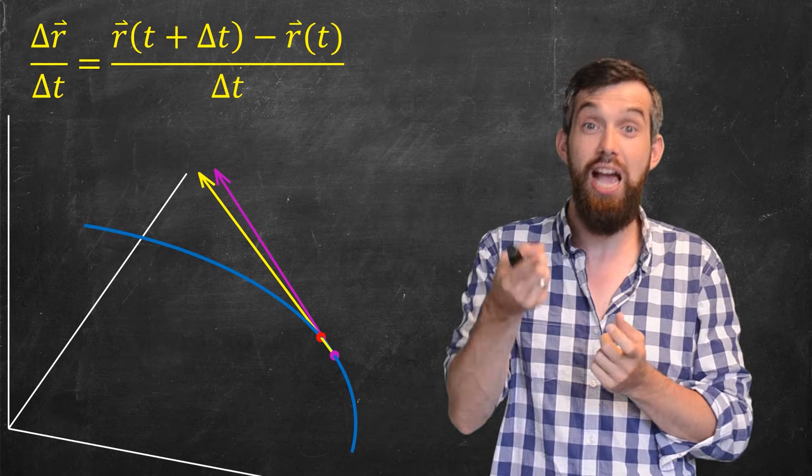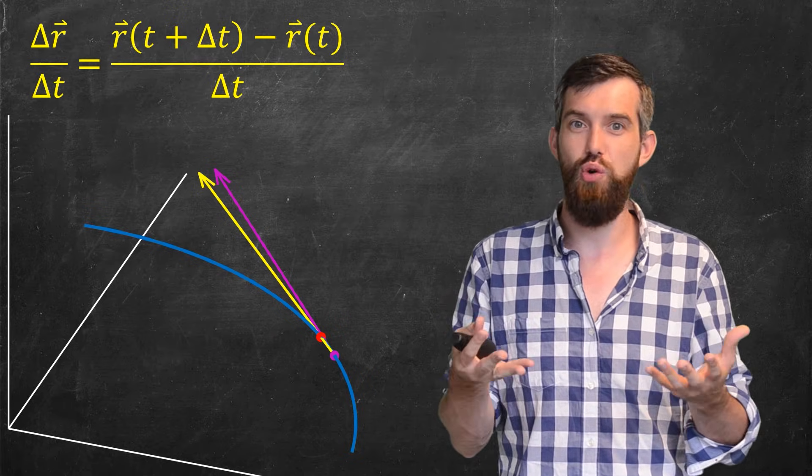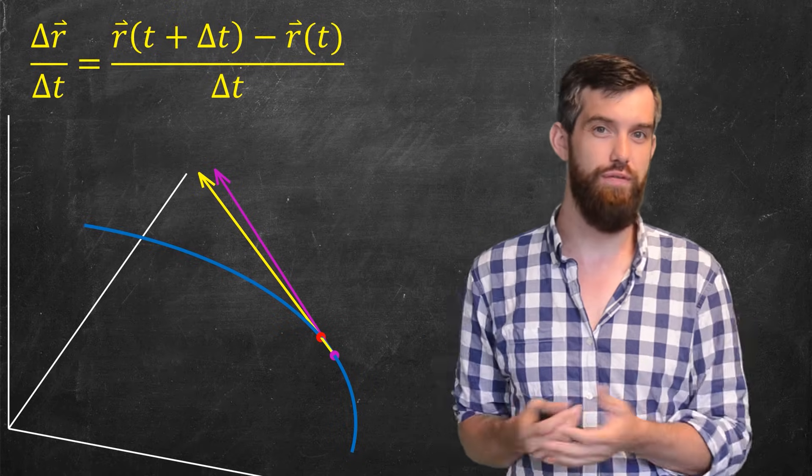And now what you'll see is that that yellow vector, the difference quotient, is getting closer and closer and closer and closer to my goal, the tangent vector.